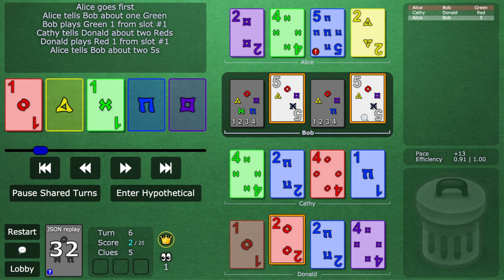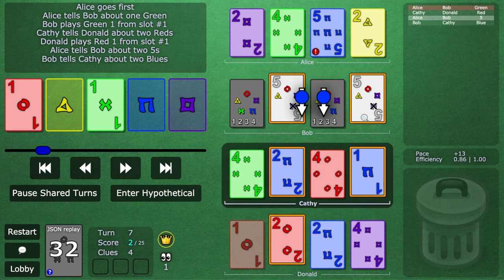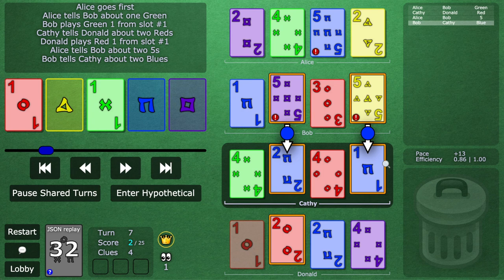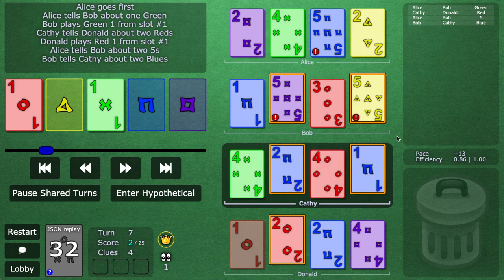Kathy's about to discard this blue one. Bob can actually clue blue here as a play clue, but wait, you might say we just talked about how if multiple cards are touched in a clue, shouldn't Kathy assume that it's the leftmost card? Well no, because of this chop focus principle.